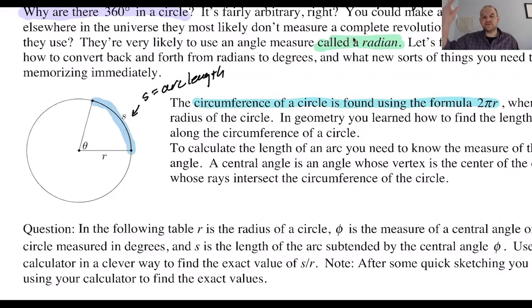Capital S is usually for surface area. We have r, the radius. And then we have theta. So theta, this symbol, is theta, T-H-E-T-A. And that's our central angle. So a central angle is an angle whose vertex is the center and whose sides intersect the circumference of the circle.